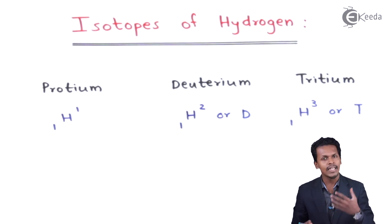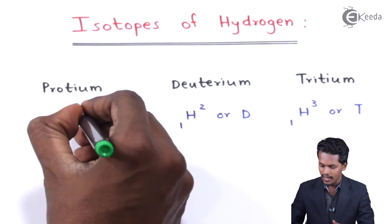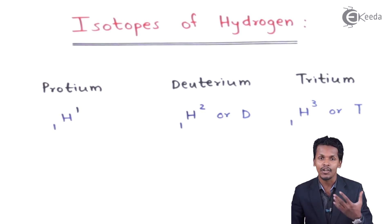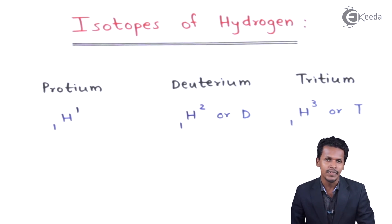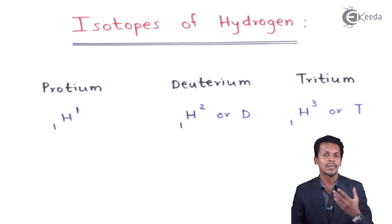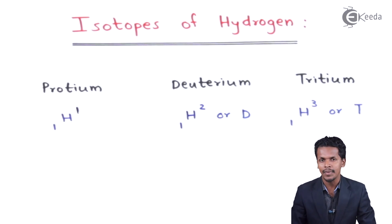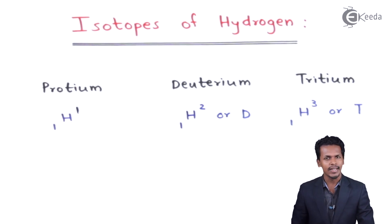Let's look at the number of particles in the nucleus of each isotope. The atomic mass number is the sum of the total number of protons plus the total number of neutrons present in the nucleus of an atom. Hydrogen has one proton and one electron.